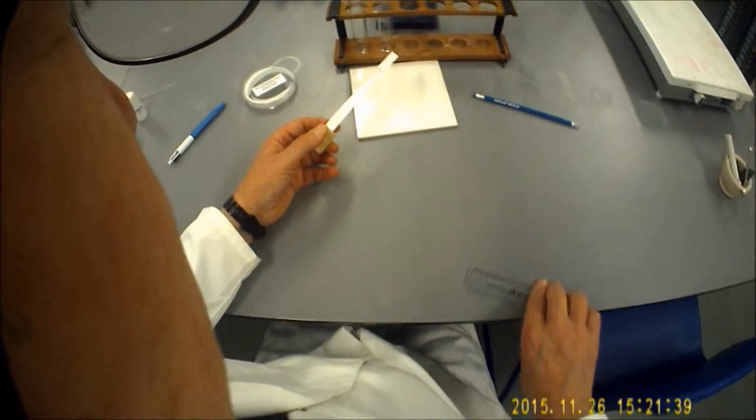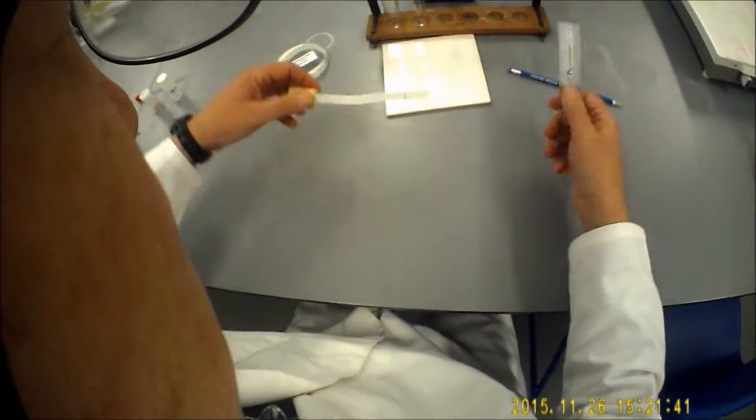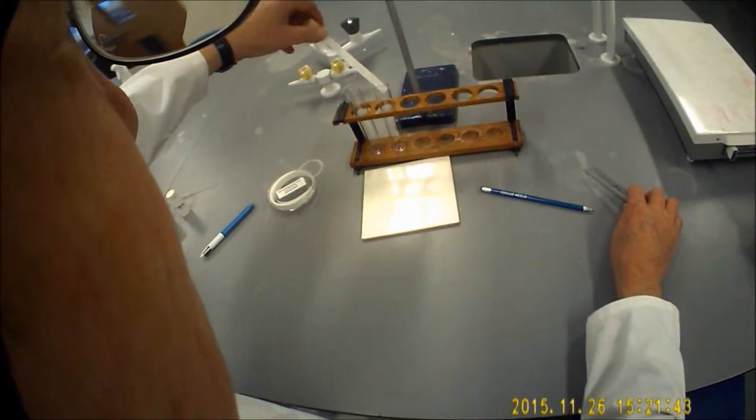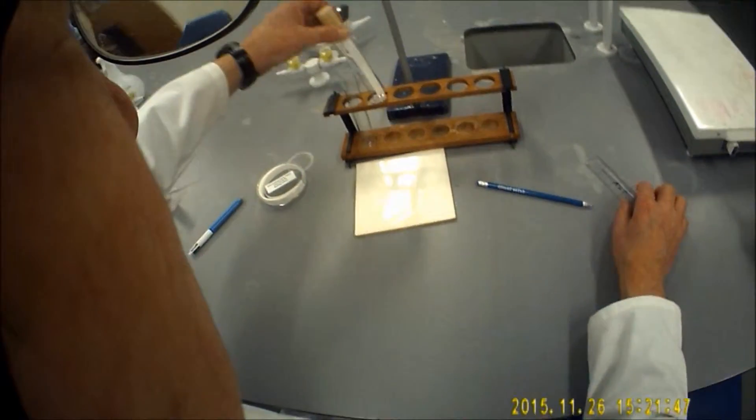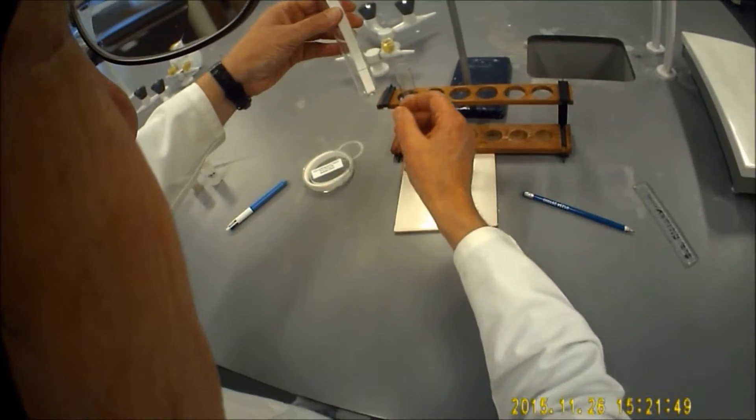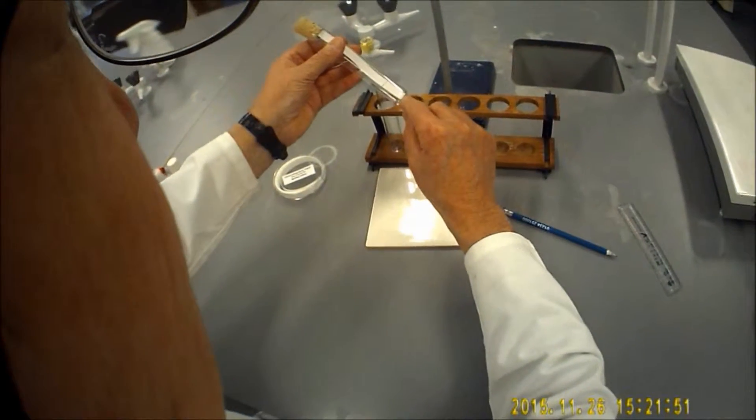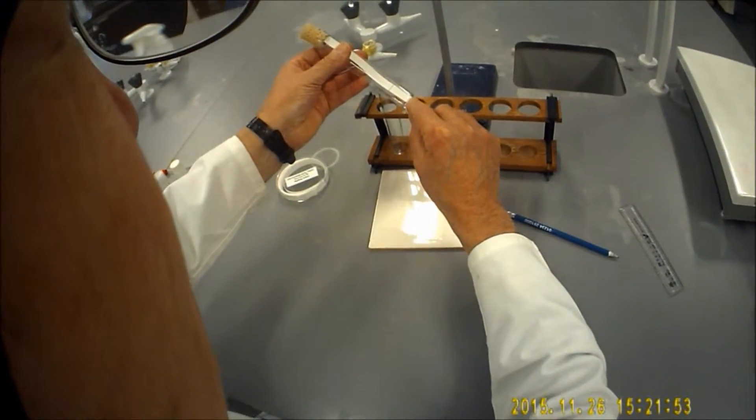So we'll just get rid of that last bit of curl there, that's better. In it goes. What we want is the chromatography paper to just clear the bottom of the tube there.